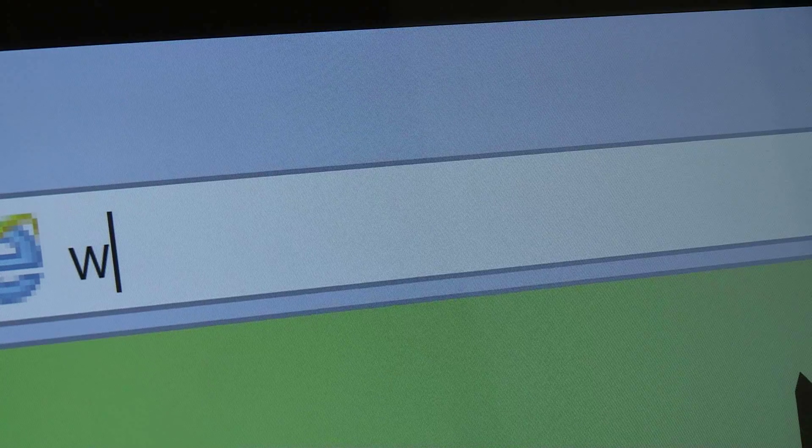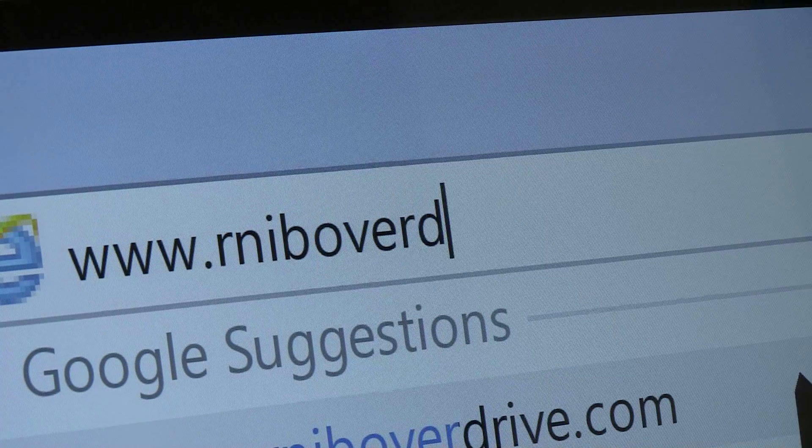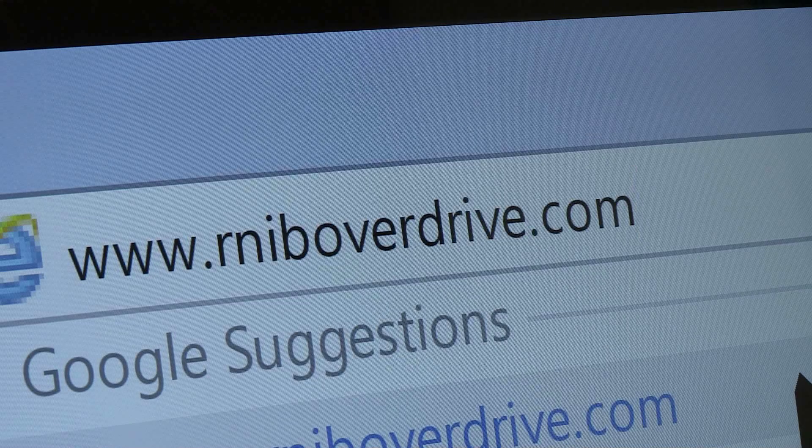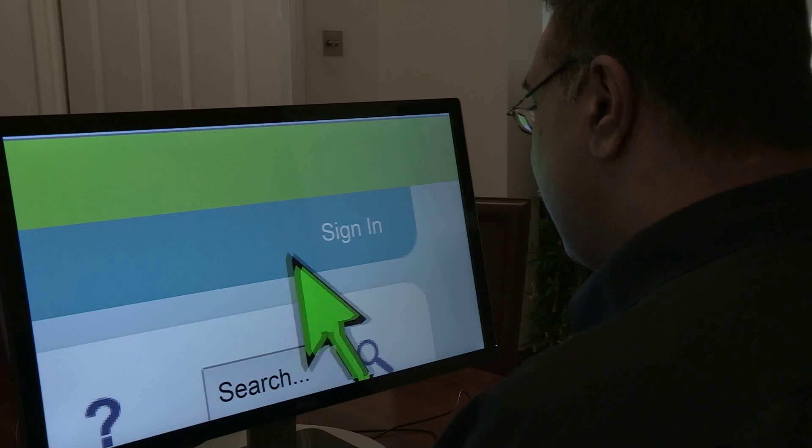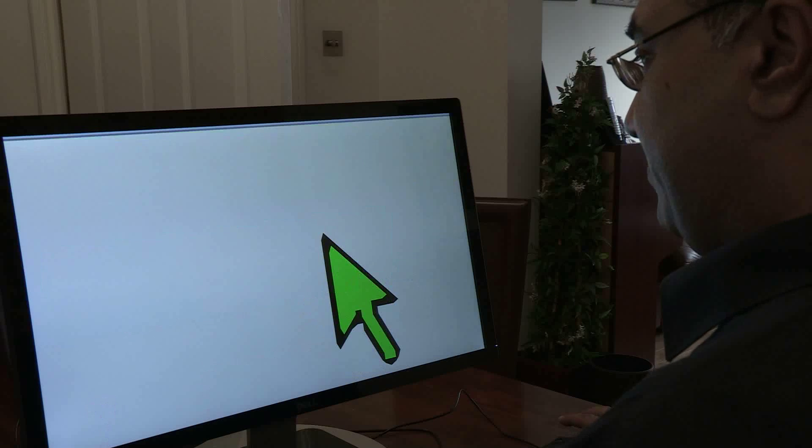Click on the address bar and type in www.rniboverdrive.com. It then takes you to RNIB Overdrive's website, and in the top right-hand corner you have a sign-in link. You click on the link.